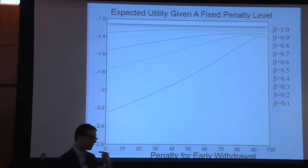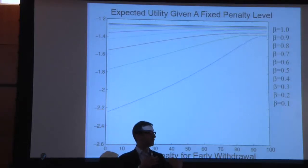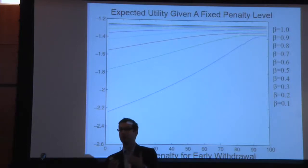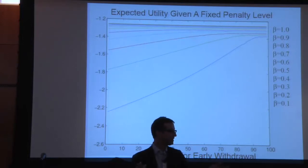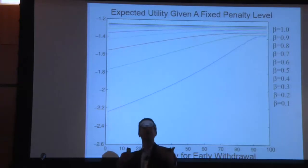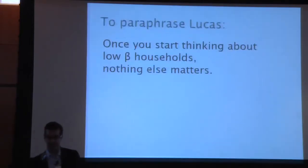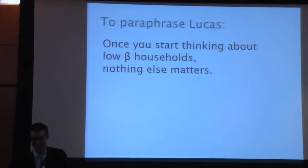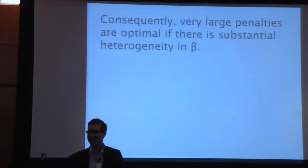An emerging lesson: penalties that are too low are really damaging for low-beta agents, but penalties that are too high are barely damaging for high-beta agents. The normative implication: the optimal penalty is going to be very high in an economy with diverse agents heterogeneous on beta. To paraphrase Lucas: once you start thinking about low-beta households, nothing else matters. Consequently, very large penalties are optimal if there is substantial heterogeneity in beta.